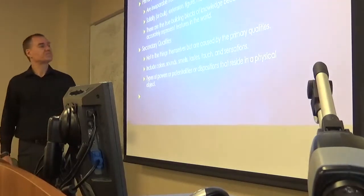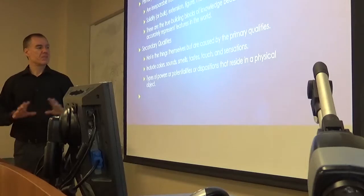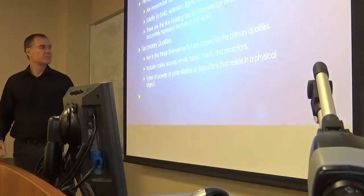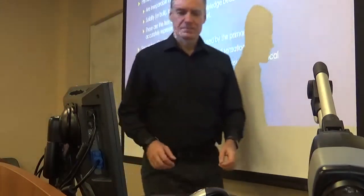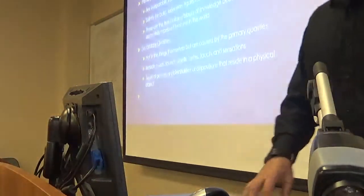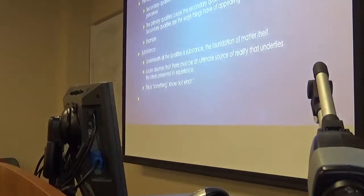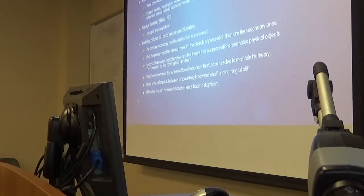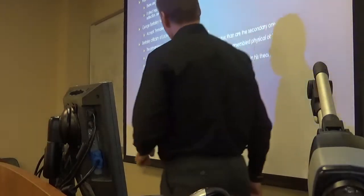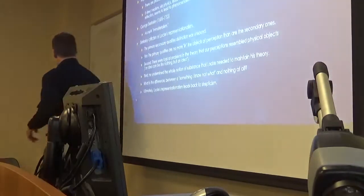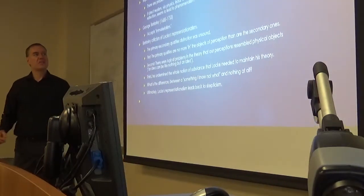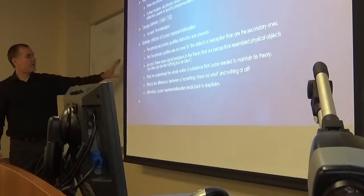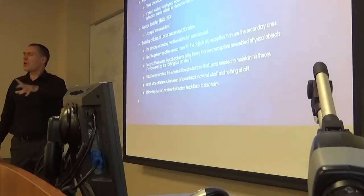So all the stuff that's out there is primary qualities, and what we experience are these secondary qualities. This is the view of the representationist. One implication of course of this view is this problem of the external world: namely, how do you know there's really that world out there? I've been talking about, metaphorically speaking, this wireframe reality out there, and a good question is how could you ever tell?